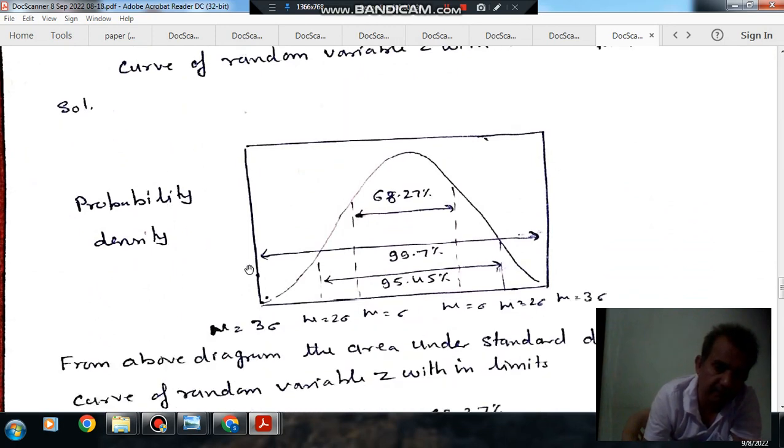So this is your probability density curve with random variable which is in normal distribution.